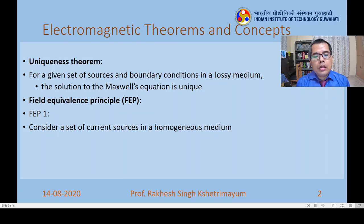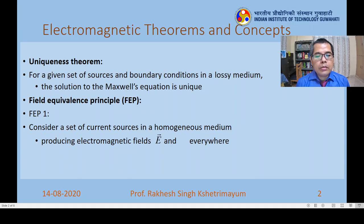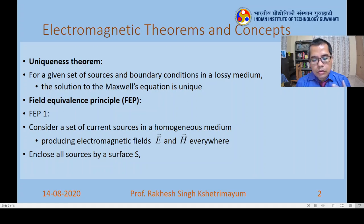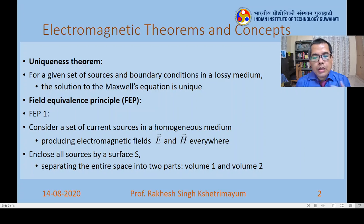In field equivalence principle one, we consider a set of current sources in a homogeneous medium. These current sources produce electromagnetic fields — electric and magnetic fields — everywhere in space. What we do next is enclose all the sources within a surface S, which divides the entire space into two parts: volume one (V1) and volume two (V2). This will be discussed with a diagram in the next slide.